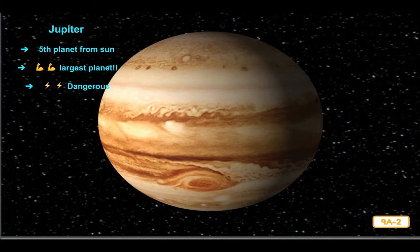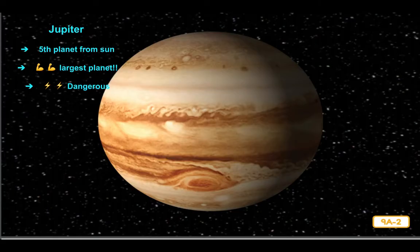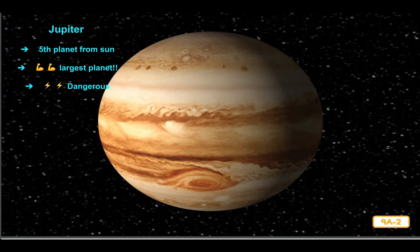It takes Jupiter nearly 12 Earth years to make one revolution around the Sun. However, Jupiter rotates on its axis faster than any other planet in the solar system. This massive planet rotates all the way around on its axis in less than 10 hours. Jupiter is made mostly of hydrogen and other gases. Because of its fast rotation and the mixing of its gases, Jupiter is an extremely violent — or dangerously rough — stormy place.